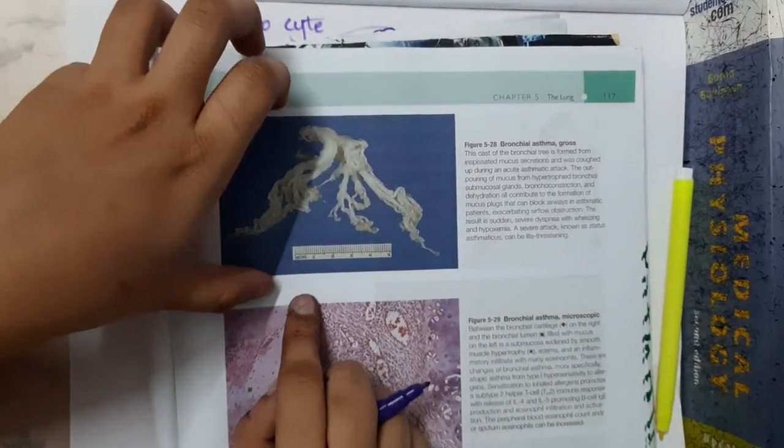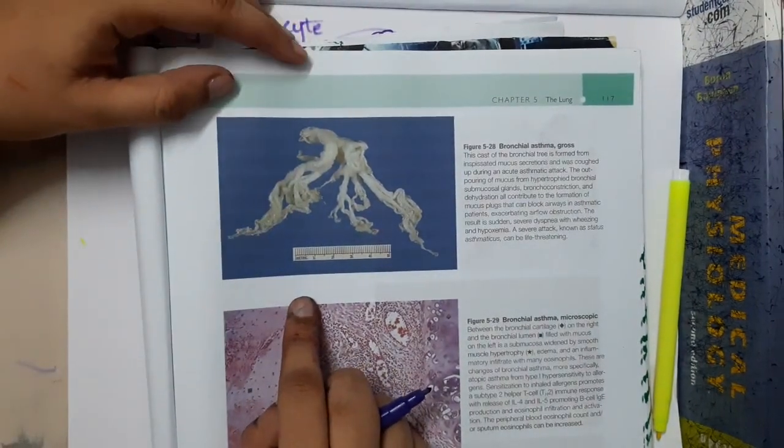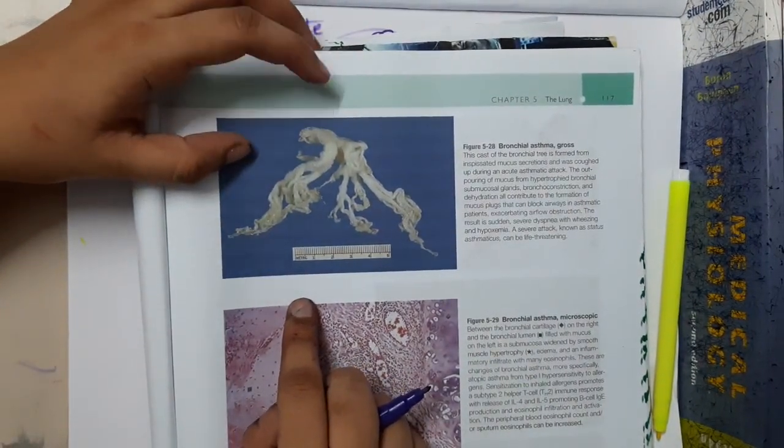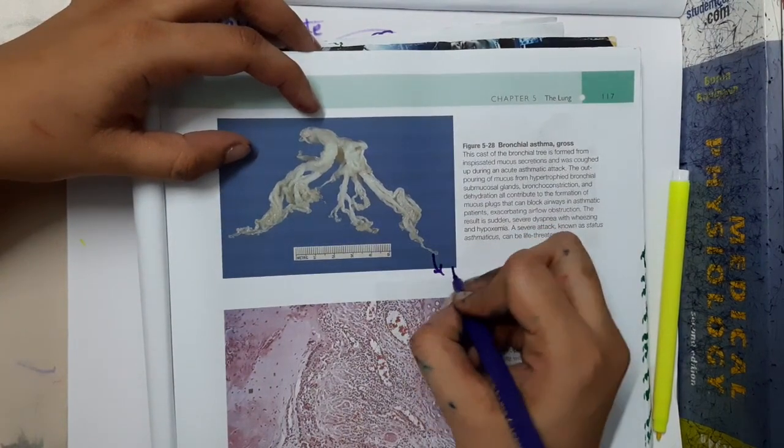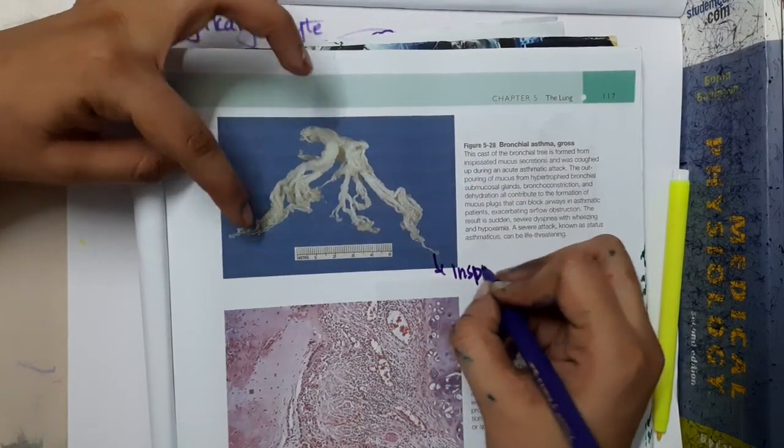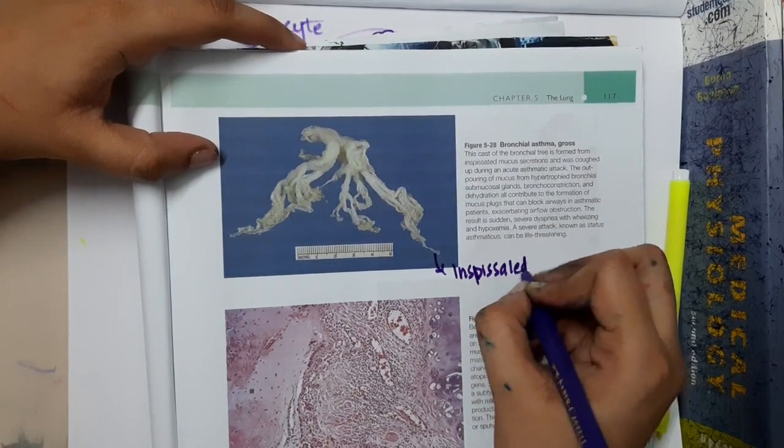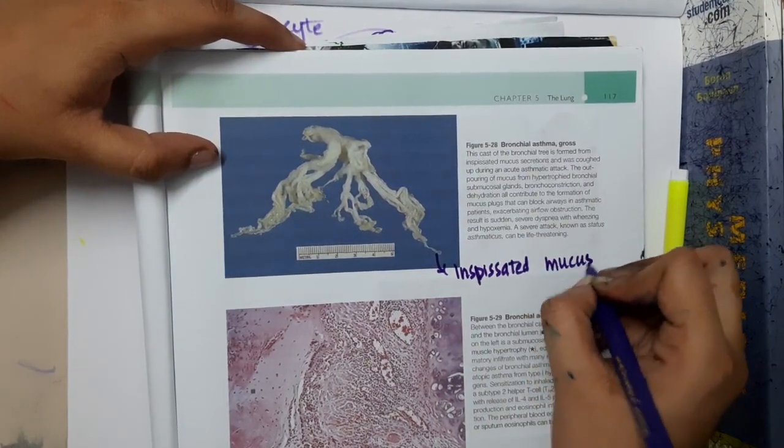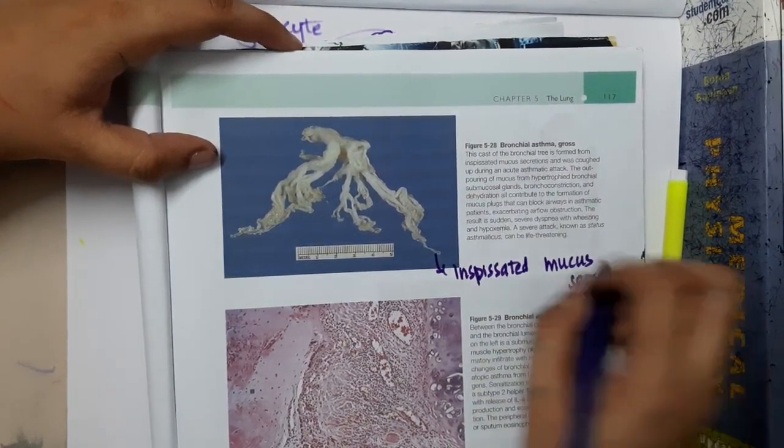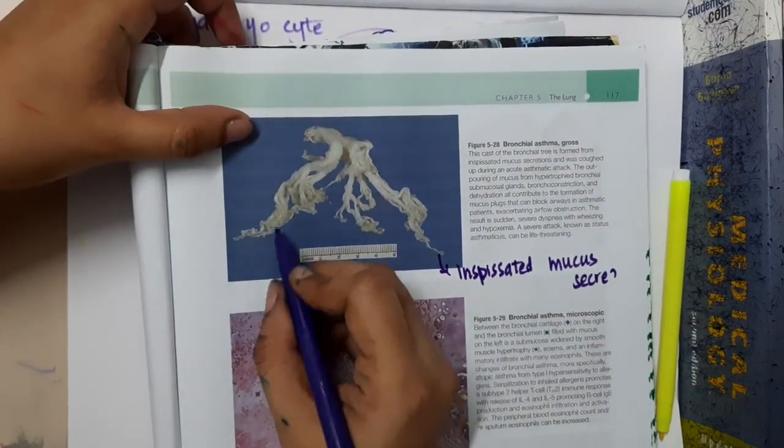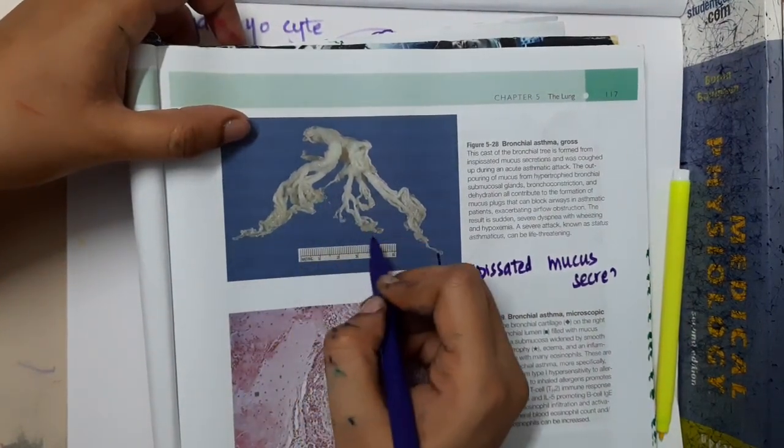If you see this picture of bronchial asthma, this is the bronchial tree, and here you can see the inspissated mucus. At the ends, you can see the inspissated mucus secretions which are seen in bronchial asthma. All these are mucus secretions.